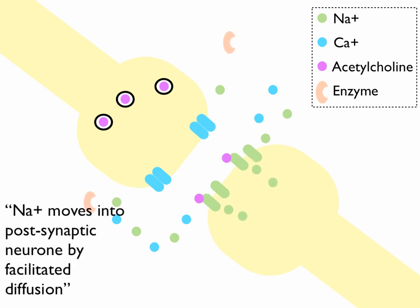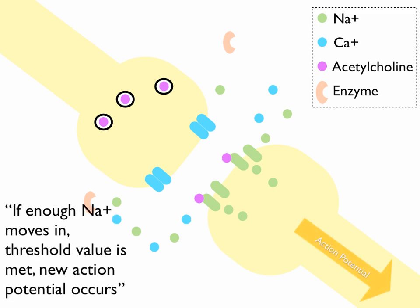Please ignore the whizzing enzymes - that's just a quirk of my animation skills. Anyways, the sodium ions are now in the postsynaptic neuron. And this causes a new action potential to be generated in the postsynaptic neuron, but only if the threshold value is met. So you need a certain amount of sodium to move in before you get that action potential continued.